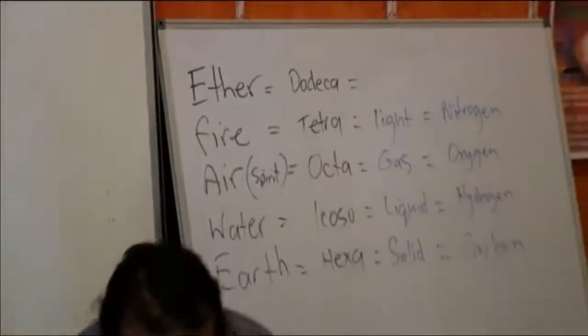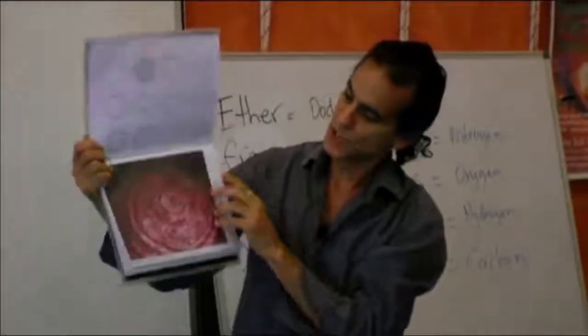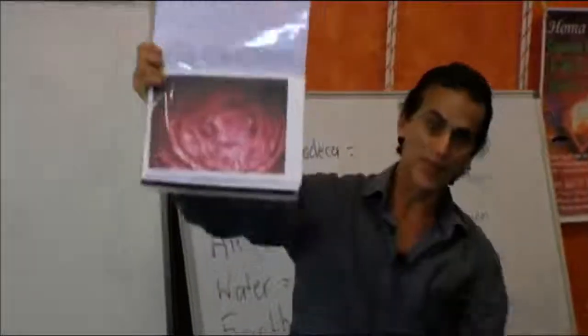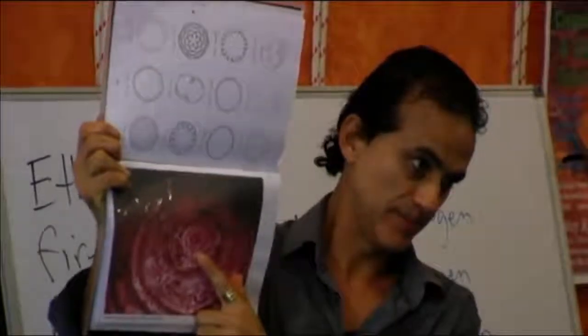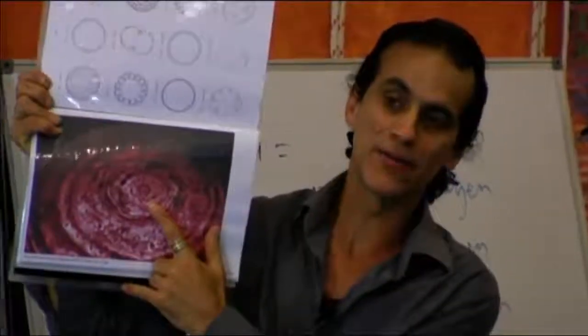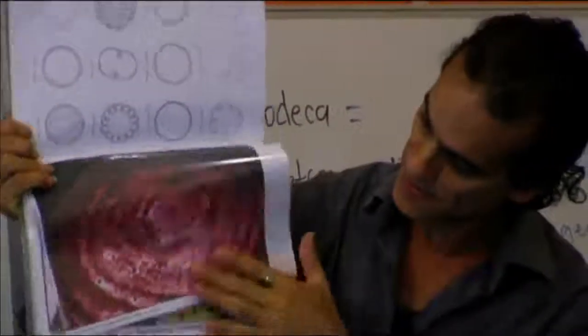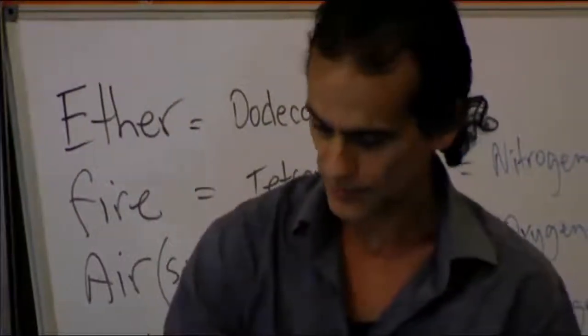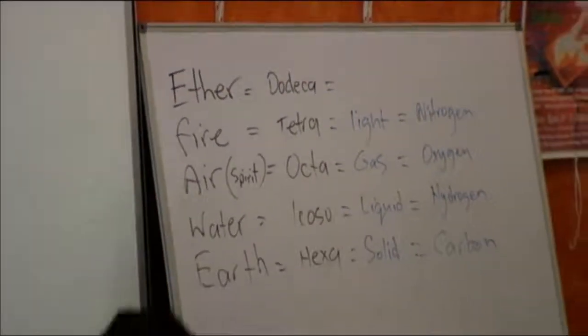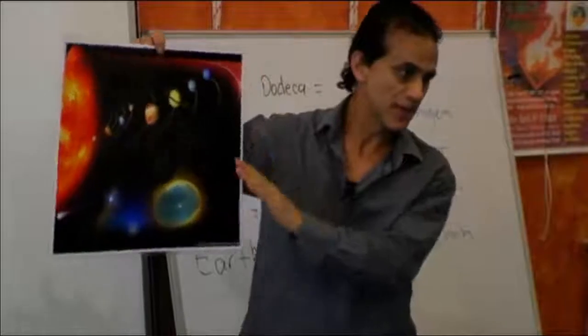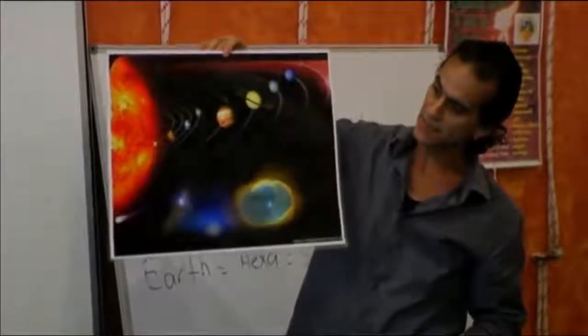This fella here... Saturn is actually a hex. This is a true picture of Saturn, people. There's a hex on top of Saturn. It's a gas giant. It's made of hydrogen and helium, just like the sun. That's a hex. And he's the grim reaper. So, as you will see, you'll see how all this comes about and how it starts to make sense.